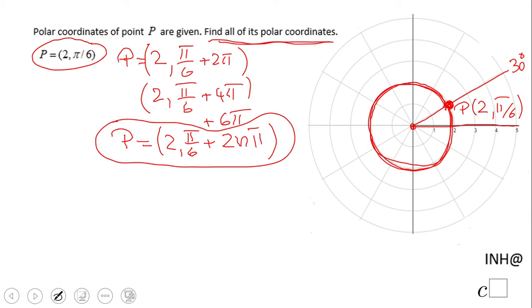But also let's take a look at this point P in a different way. Point P is also possible to be written as negative 2 and π/6 plus π.